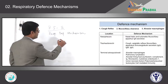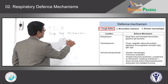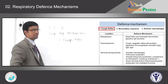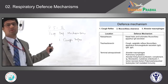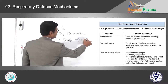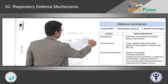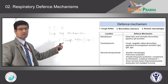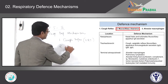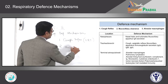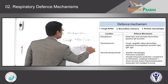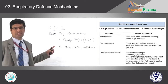The first defense mechanism is the Cough Reflex, which is mainly in the upper respiratory tract, and may also be present in the lower respiratory tract. The second defense mechanism is Mucociliary Clearance.